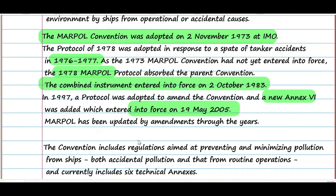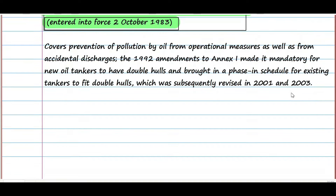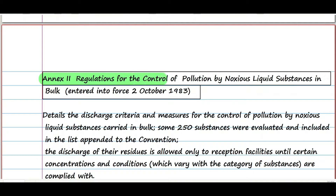In total there are six annexes. Annex 1 is the regulation for the prevention of pollution by oil, which entered into force on 2nd October 1983. Annex 2 is the regulation for the control of pollution by noxious liquid substances in bulk, which also entered into force on 2nd October 1983.